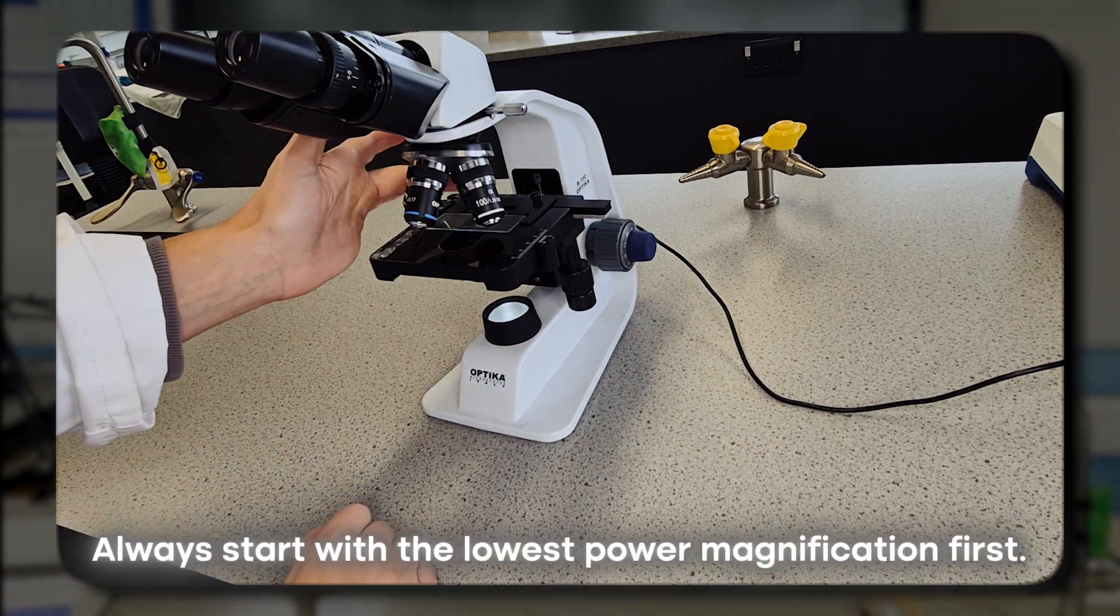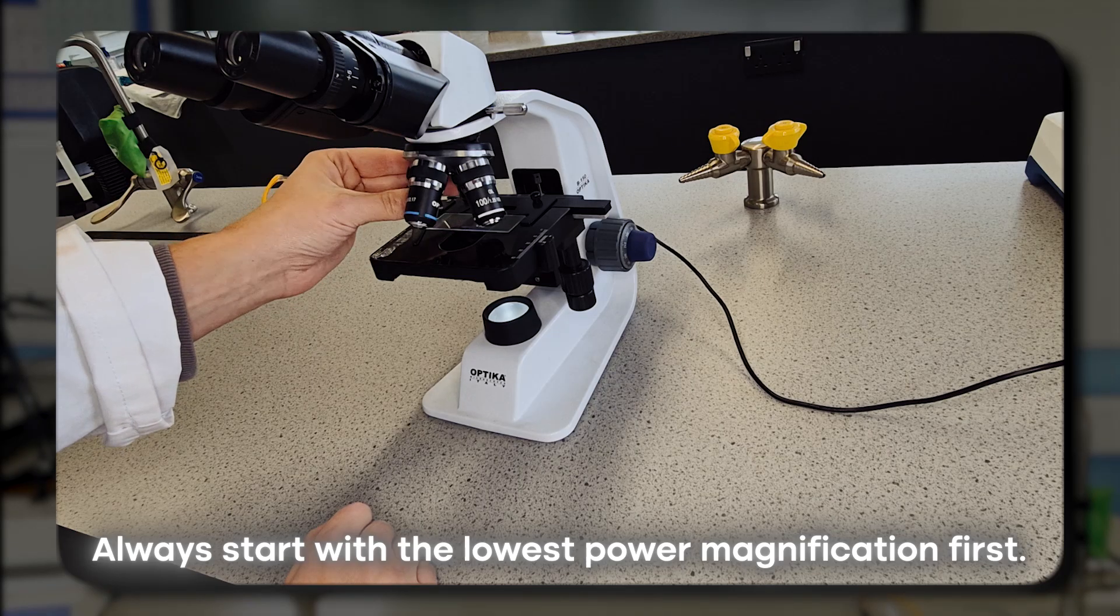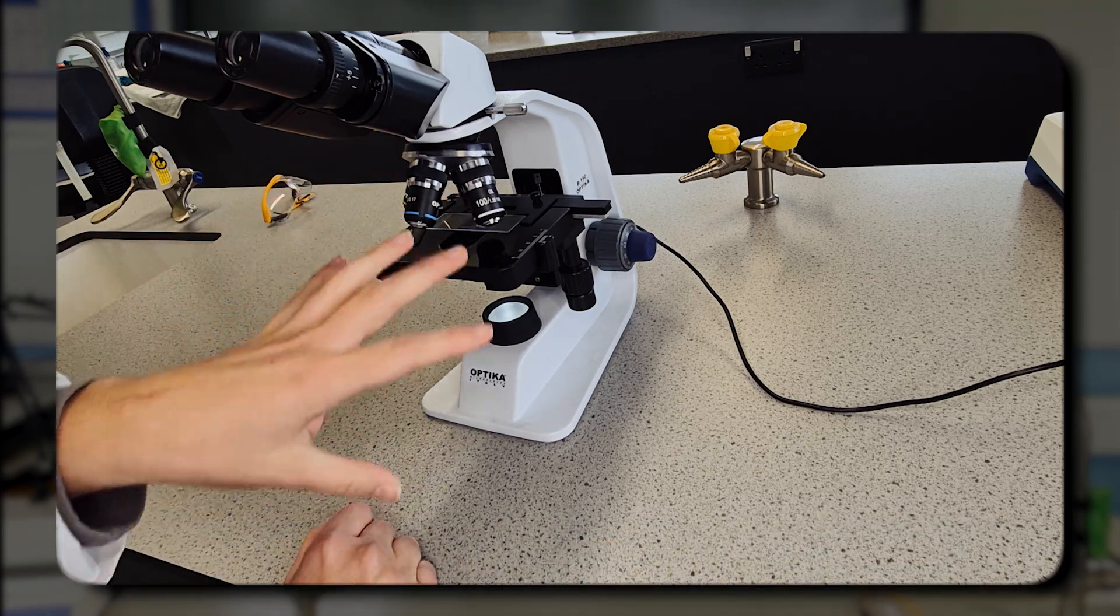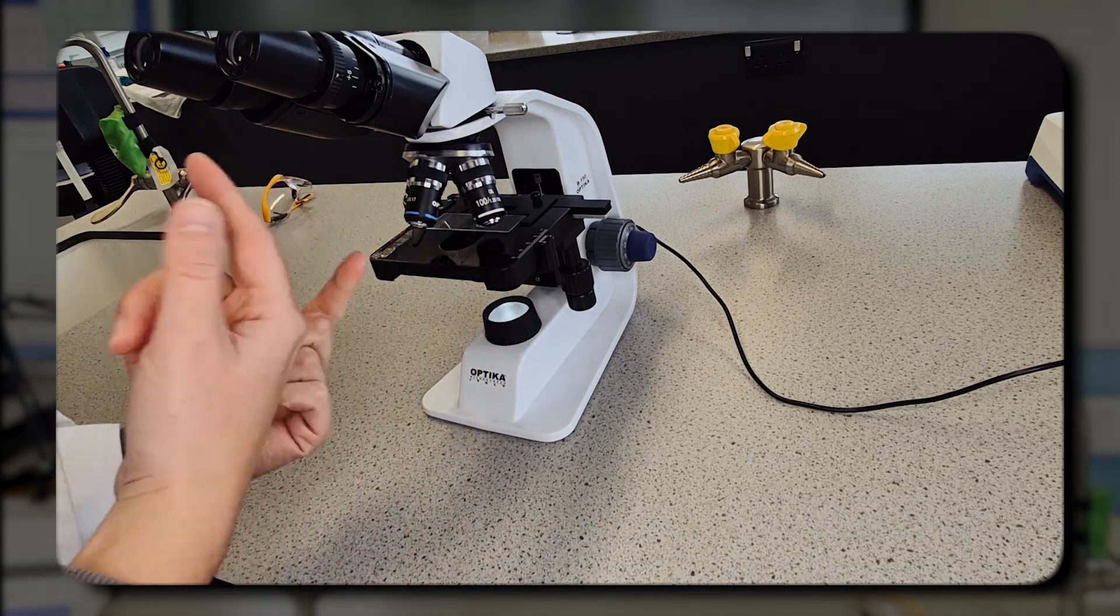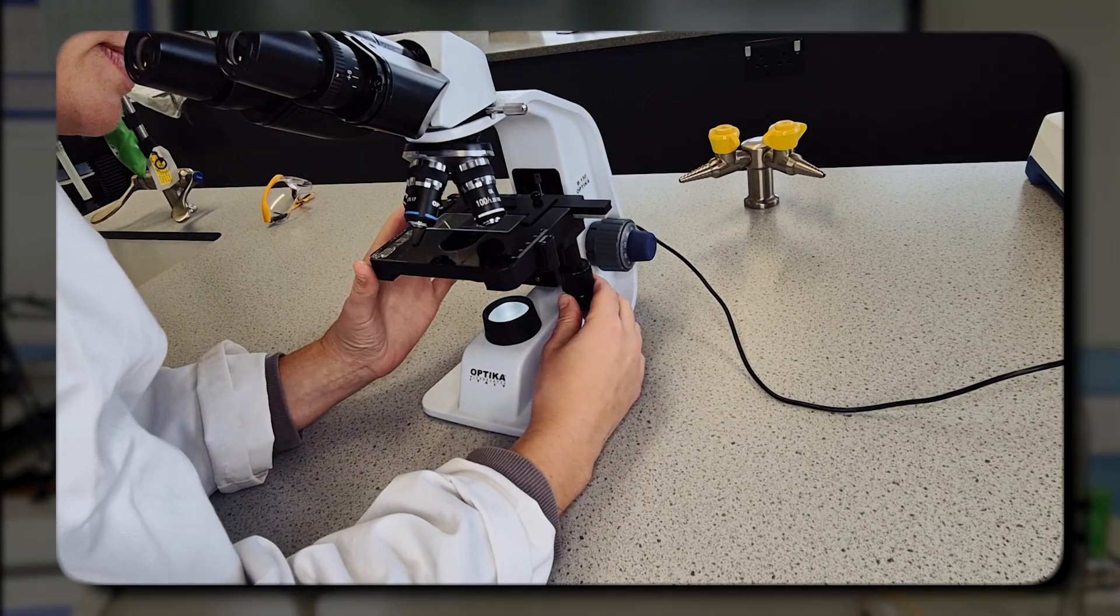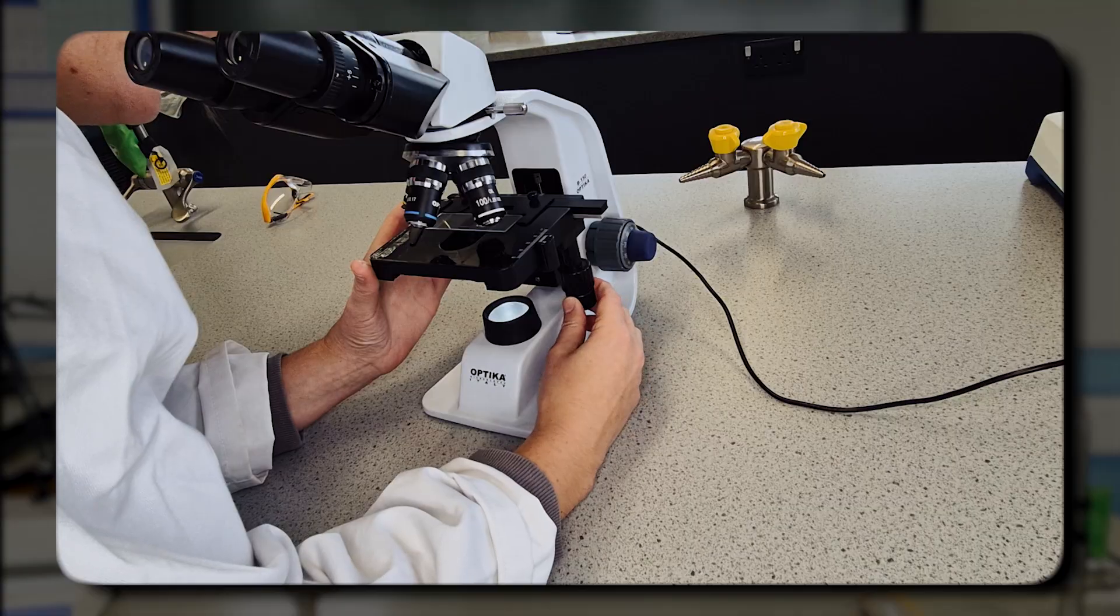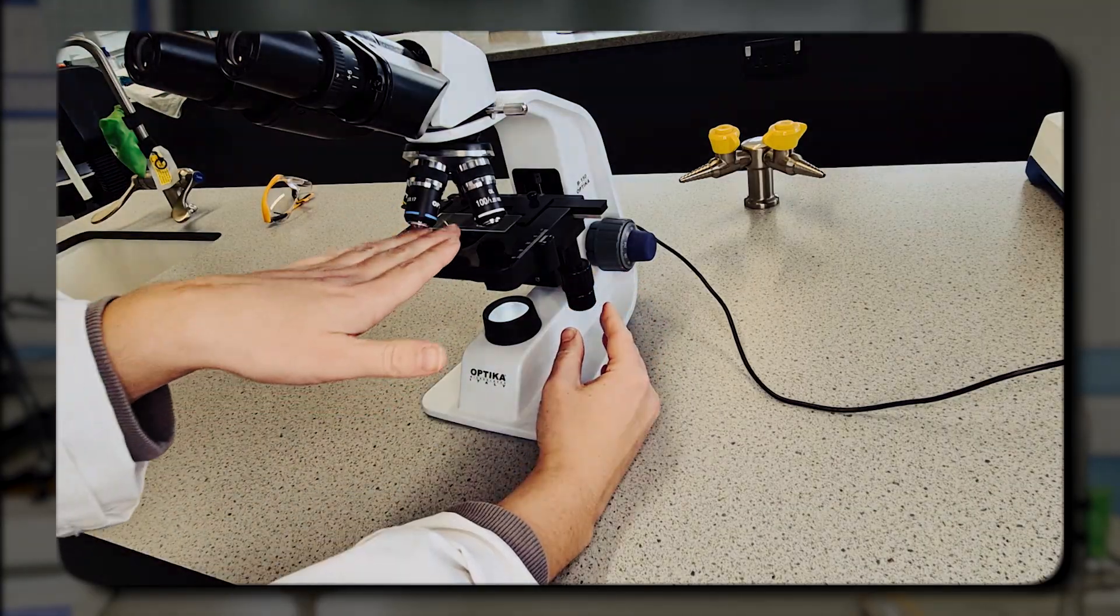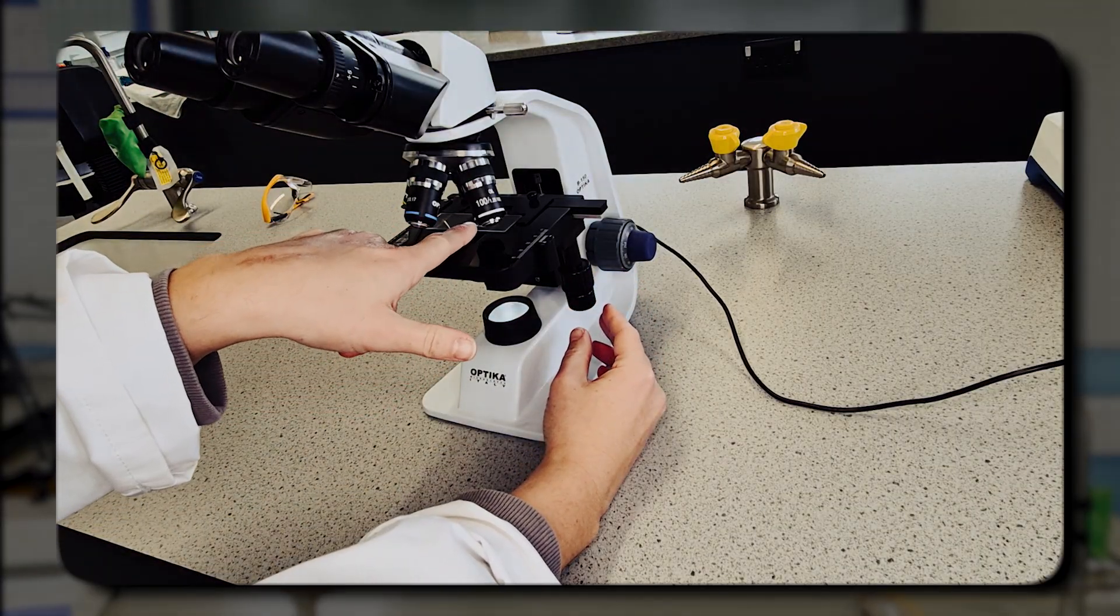Always start with the lowest power magnification first. It's easiest then to find all of the cells and then they can work their way up. Depending on what type of microscope you have, it may be the same level of sophistication or not.